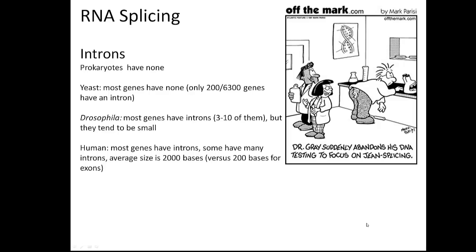This video will be a summary of the mechanism of RNA splicing. Splicing involves removing the introns from the RNA that's been produced from the process of transcription.